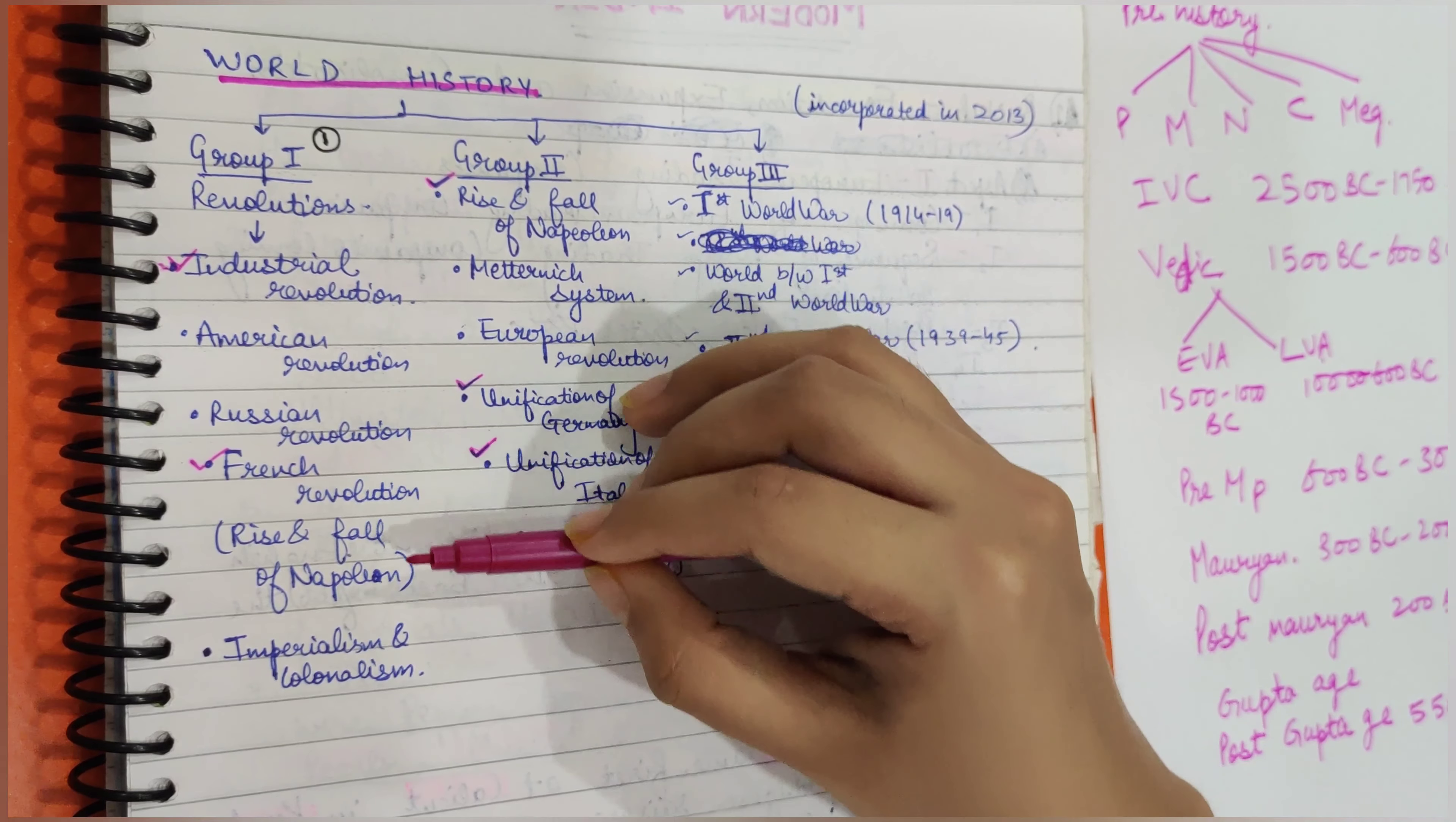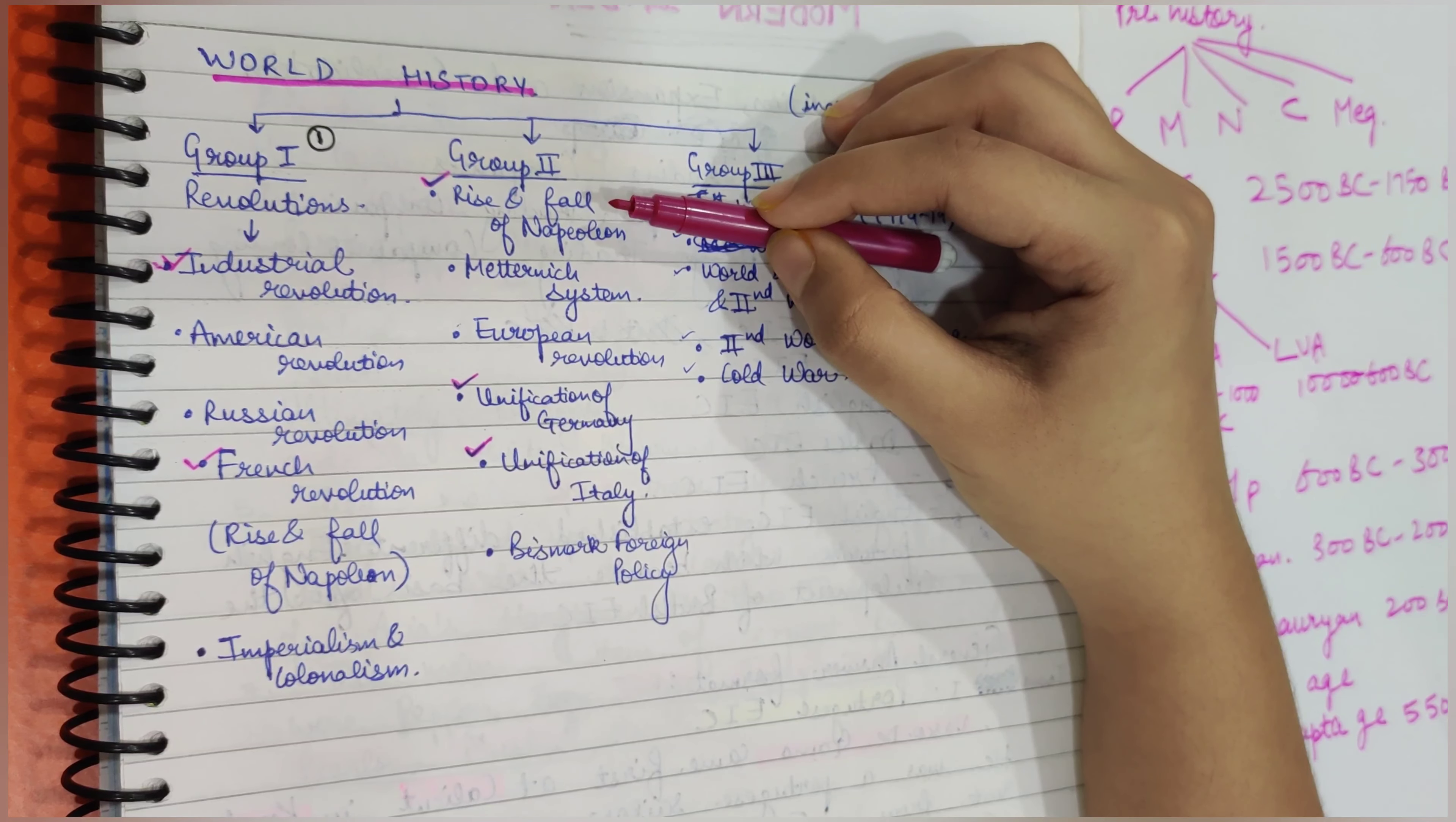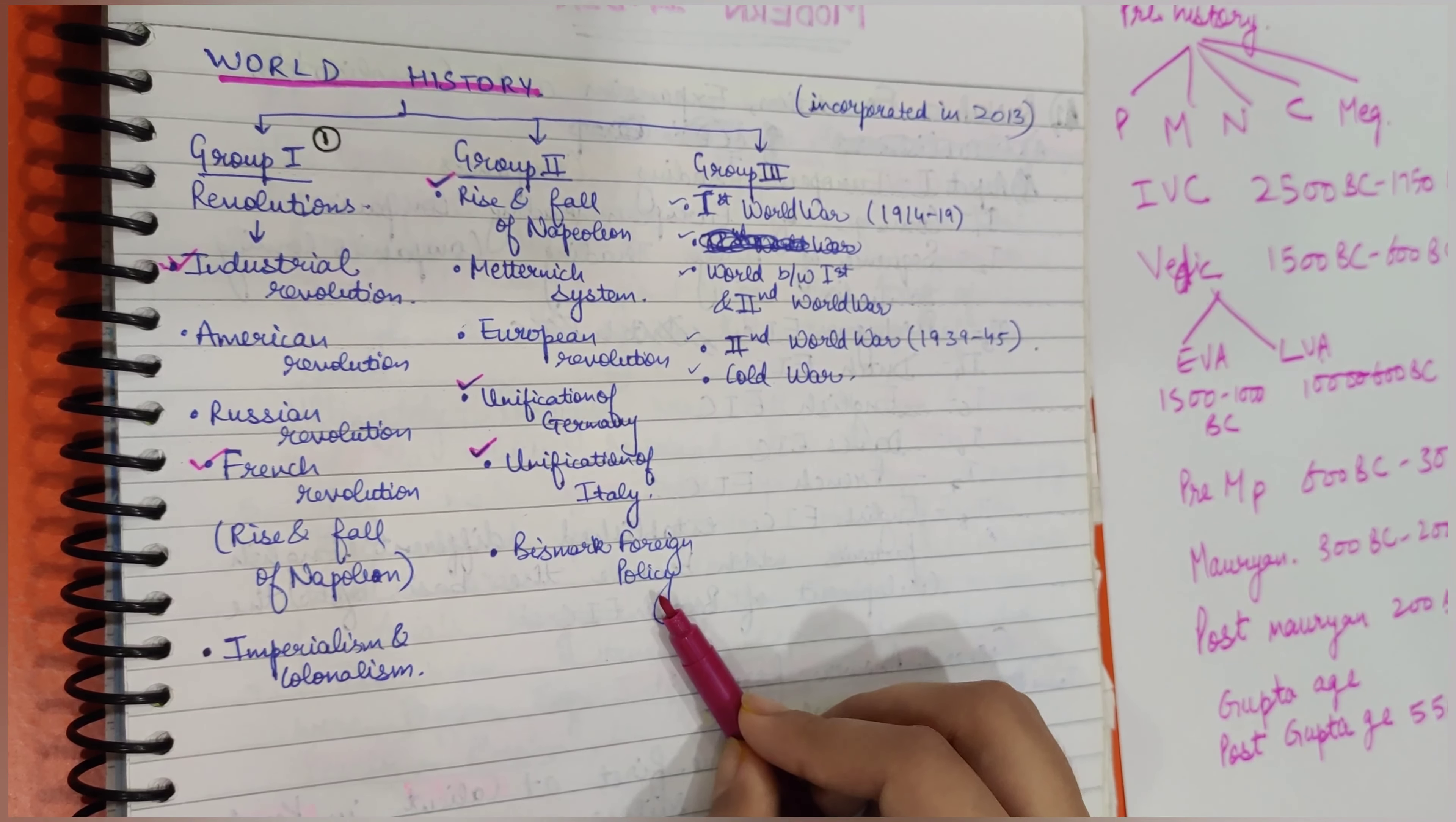In French Revolution, we will read about Napoleon and about imperialism and colonialism, as we were also colonies of the British. In the next section, we'll read about Napoleon, then the famous Continental System, the European Revolution, how Germany was unified, how Italy was unified, and the famous Bismarck foreign policy.